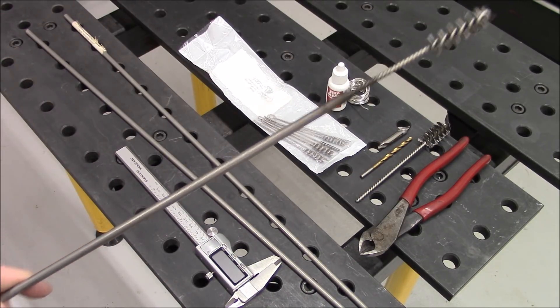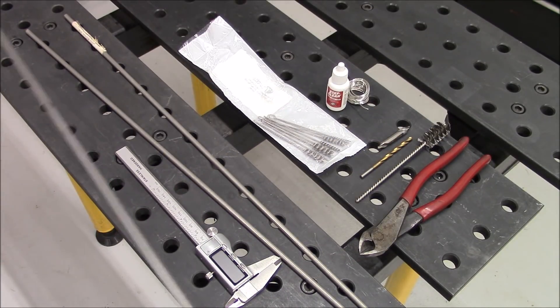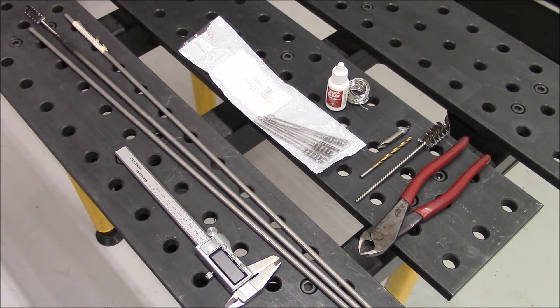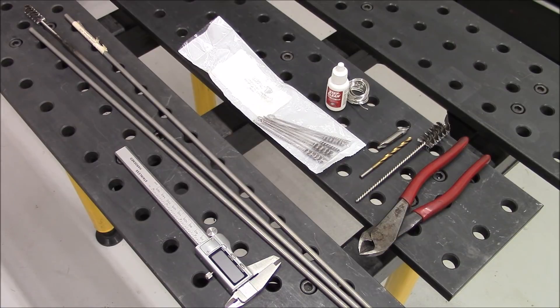We're going to take you through the steps of how we build one of these and what you need to get that task done. We're going to use a lathe to poke the hole in the end of the quarter inch stainless rod, but you could do it with a hand drill as well.